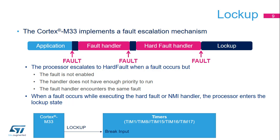When a fault occurs while executing either the bus fault handler, the memory management fault handler, or the usage fault handler, the processor escalates this event to the hard fault handler. Note that bus fault, memory management fault, and usage fault have to be explicitly enabled. By default, any fault leads to the hard fault handler. When a fault occurs while executing the hard fault handler, the processor enters a state named lockup, and asserts the lockup output to indicate a serious non-recoverable error. In the STM32L5 microcontroller, this lockup output is internally connected to timer brake inputs so that a safe state can be entered when the STM32L5 is used to control a power electronic equipment such as a motor.